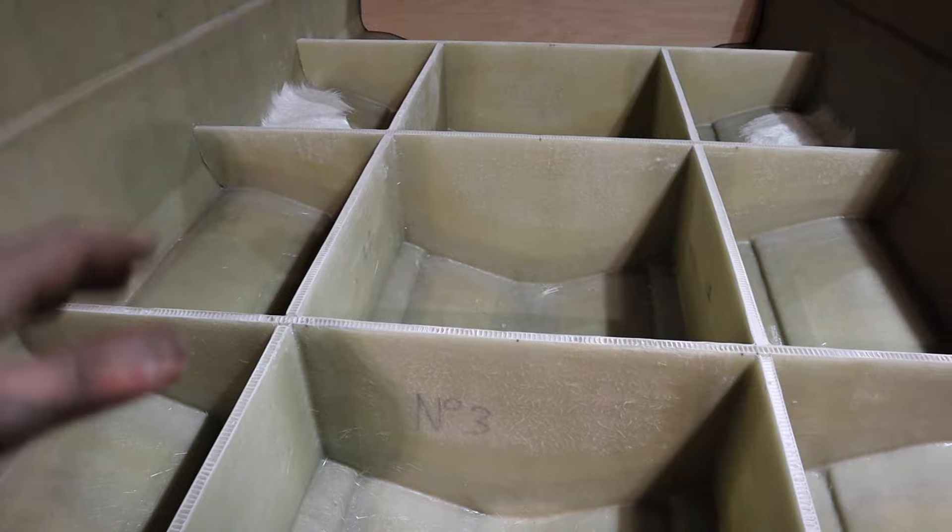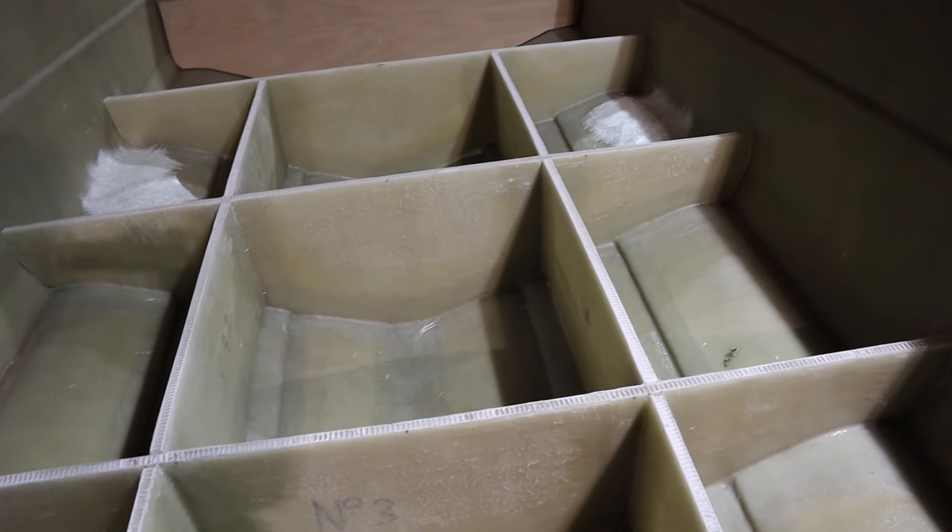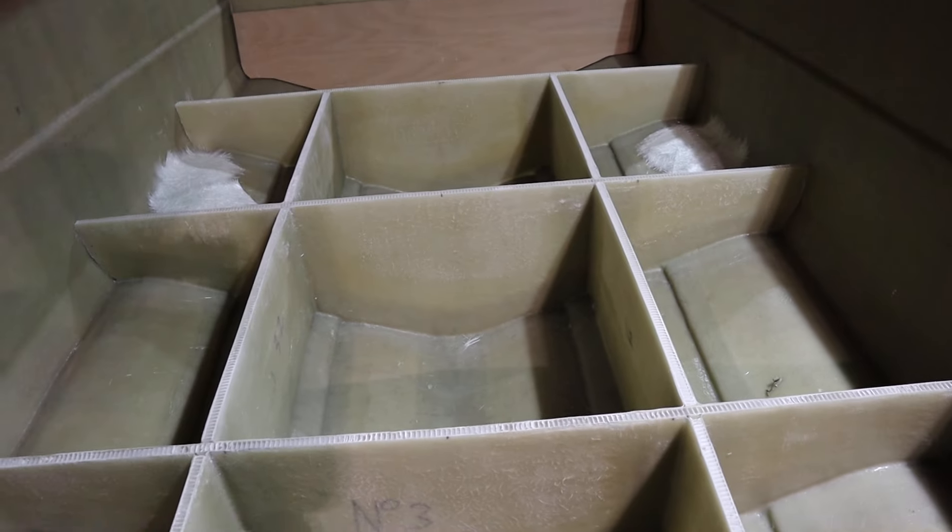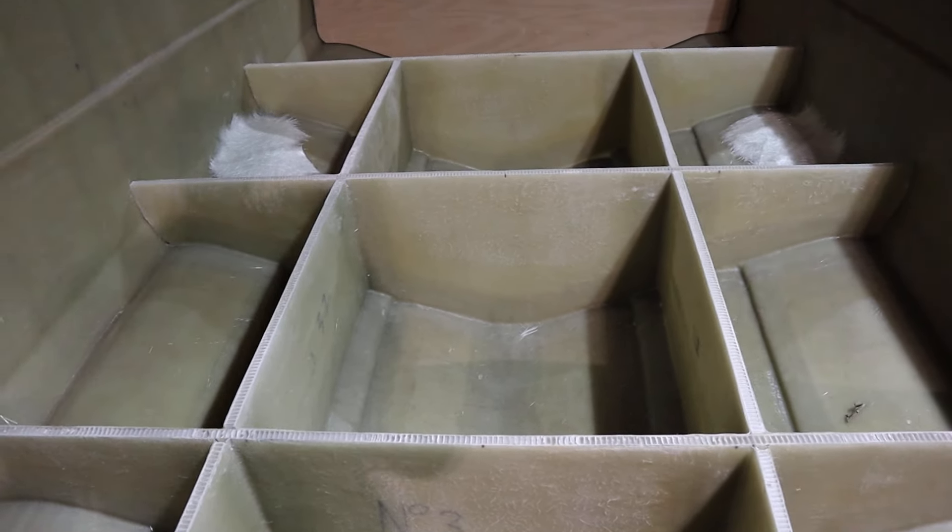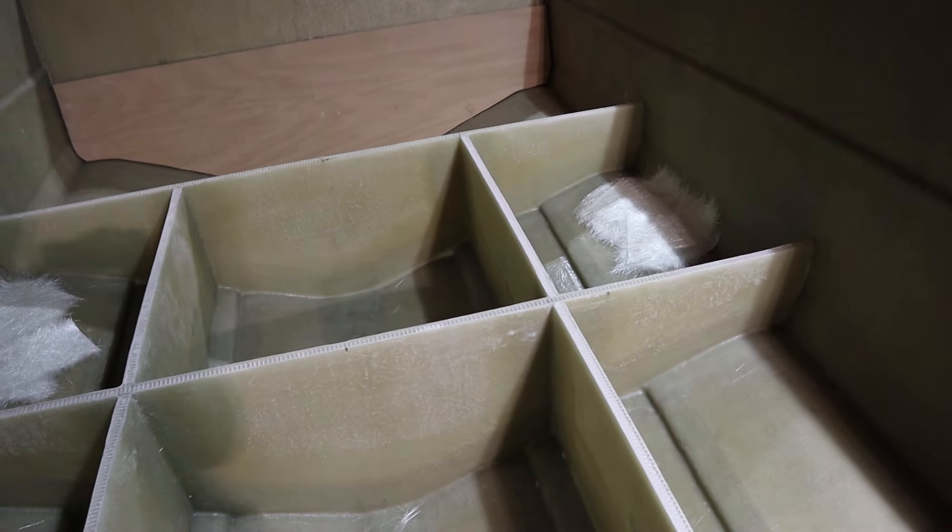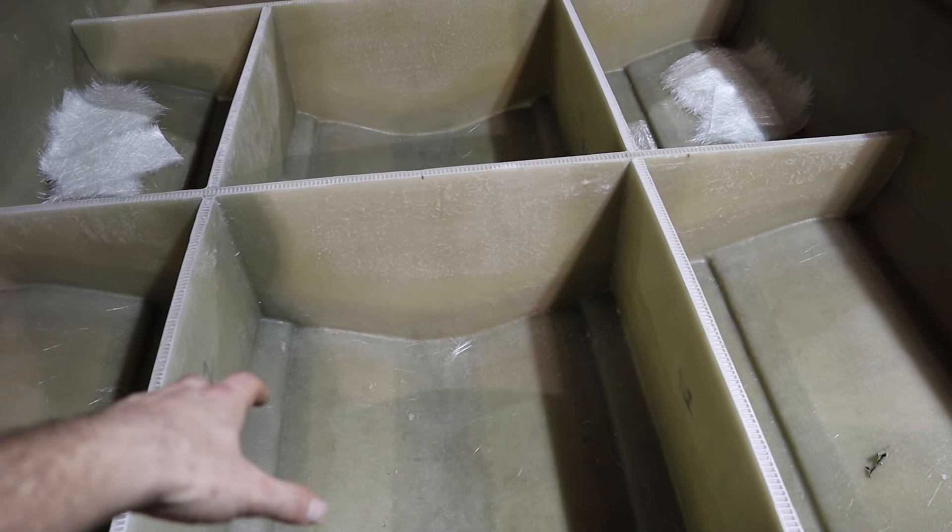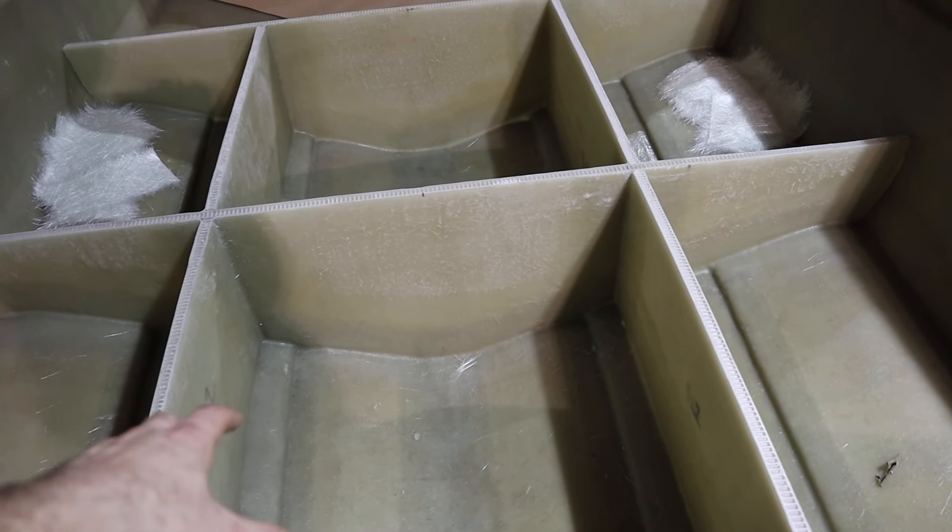Other than that, next we've just got to finish off the transom at the end there and then just tab that in. Once that's in, we're going to get this lifted out on a couple of gantries, put onto a trolley. Then we can carry on with the next stage, which would be a fuel tank, which is going to go in this compartment here. That'll be a 200 litre aluminium tank, so really good for offshore fishing.